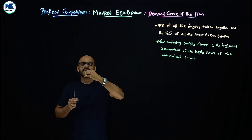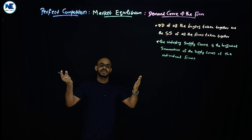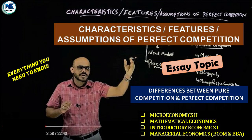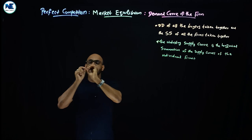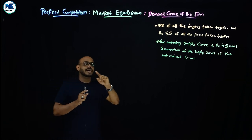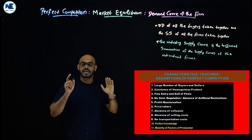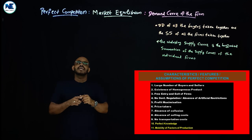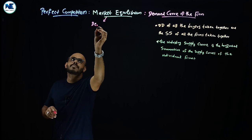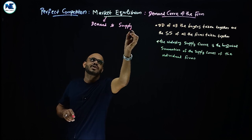Recall the important features of perfect competition. First, there is a large number of buyers and sellers. This means no individual firm can influence the market price — that is the key point. Similarly, no individual buyer can influence the market price. The price is given. Simply put, the market price is determined by market forces — that is, demand and supply.